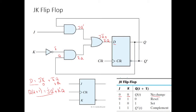When J=0 and K=1: J=0 makes the first term 0, and K=1 makes K̄=0, so the second term is also 0. We are supplying 0 as input at time T, so at time T+1 we observe 0 as output. Therefore, J=0, K=1 is the reset input.